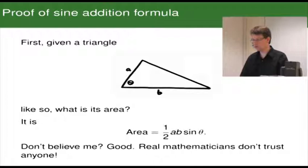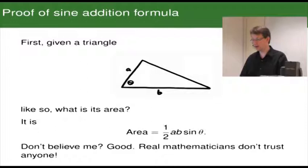First, given a triangle like so, what is its area? We have a triangle with an angle theta and two edges adjacent to that angle, A and B. What's its area? Its area is one half of A times B times sine theta.